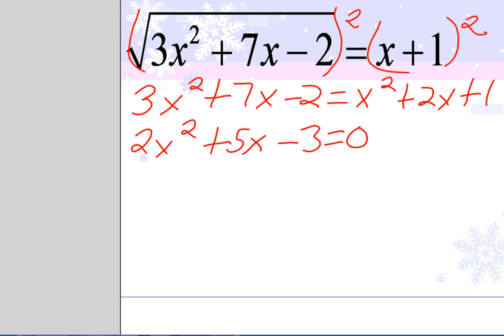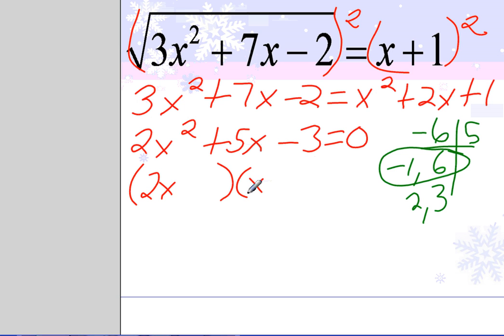Let me see if this is factorable. It has no GCF. Are there factors of negative 6 whose sum is positive 5? 1 and 6 or 2 and 3. I need the signs to be different to multiply to a negative 6. So that has to be negative 1 and positive 6. So let's factor this. First times first is 2x times x. Outer times outer has to be positive 6. I need a 3 in the outer. Inner times inner has to be negative 1. I need a negative 1 in the inner. There it is factored.